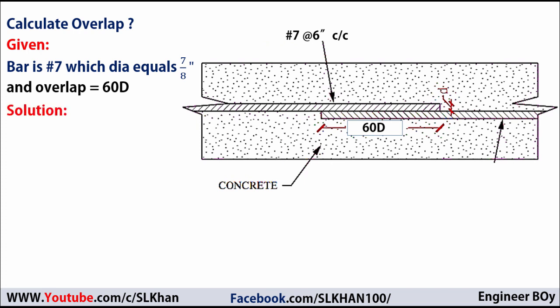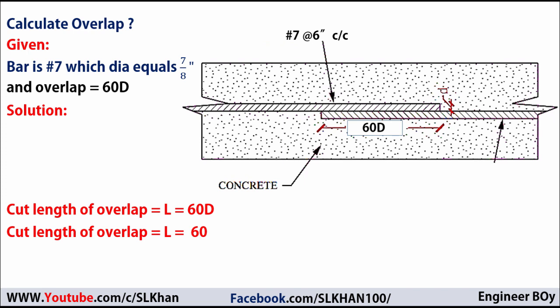In the solution, the length of overlap equals 60D. Our length of overlap equals 60 times D, which is the diameter of the bar. It is a number 7 bar, so the diameter must be 7/8 inches. That means the overlap is 60 times 7/8 inches, which equals 52.5 inches. This is how we calculate the extra cut length for rebar overlap.